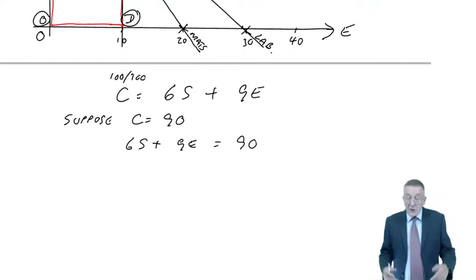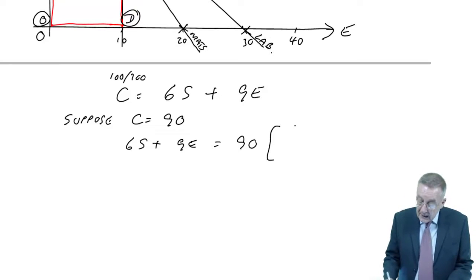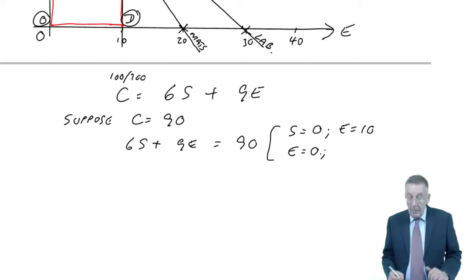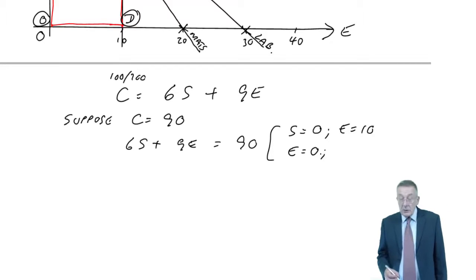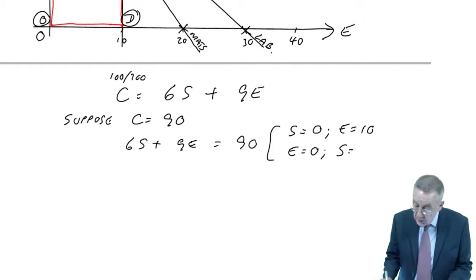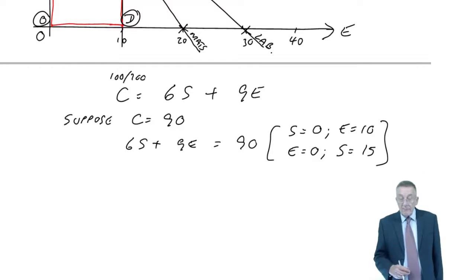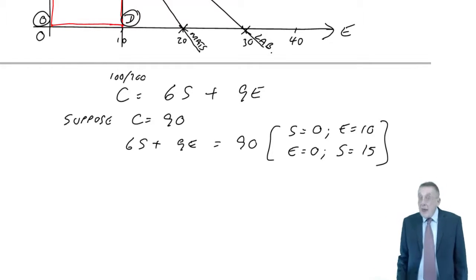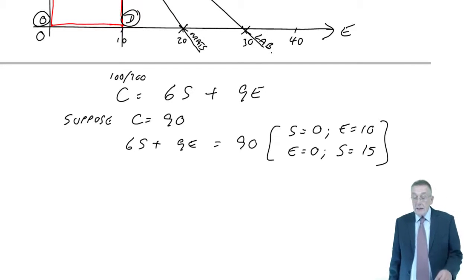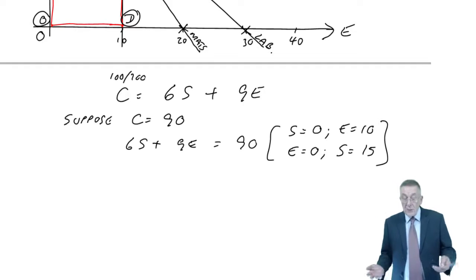And again, that's a straight line on the graph. So if S were equal to 0, 9E is 90, E would be 10. If E was equal to 0, 6S would be equal to 90, S would be equal to 15. Let me put that on the graph.